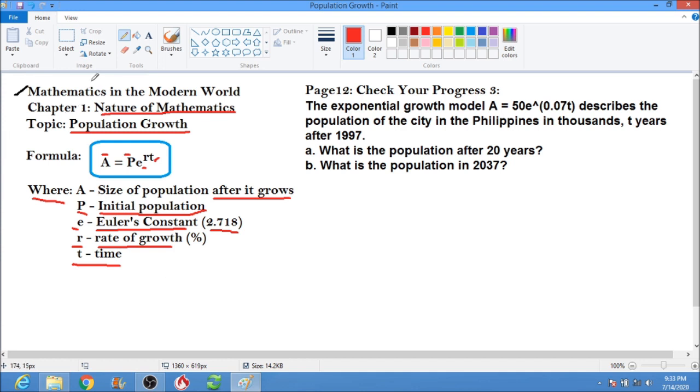In your Mathematics in the Modern World book, page 12, check your progress number 3. Let's discuss check your progress number 3. The exponential growth model A equals 50 E to 0.07t describes the population of the city in the Philippines in thousands, years after 1997. The question is, for letter A, what is the population after 20 years?